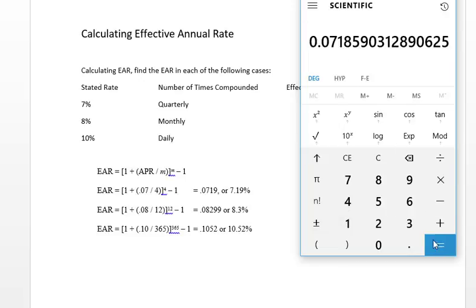So it's a 1.0718 number. Then I'm going to subtract the 1 from that. And it turns out to be 0.07185, or 0.0179. You just round that up, or 7.19%.